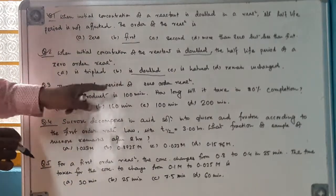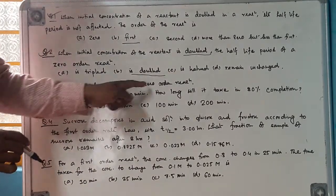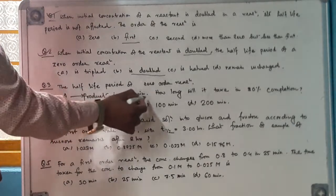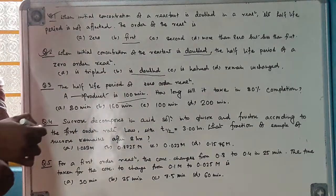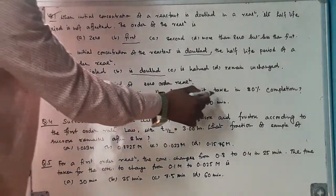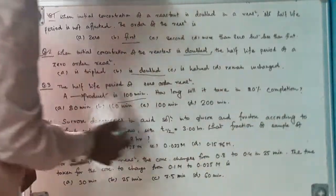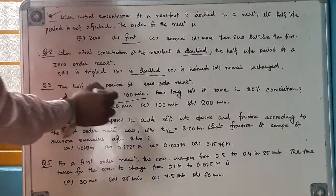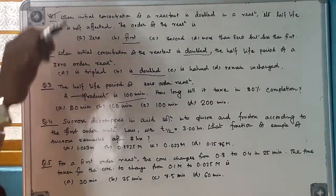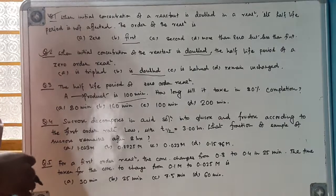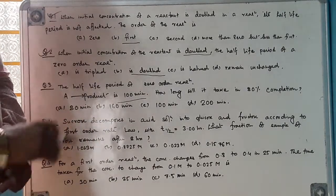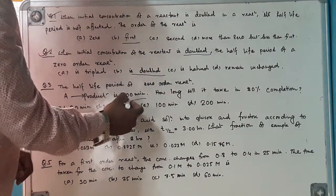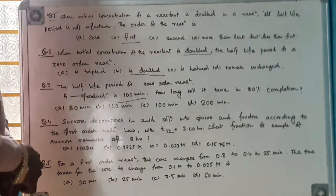Question 3: The half-life period of a zero-order reaction is 100 minutes. How long does it take for 80% completion? Since half-life is 100 minutes, 50% is covered in 100 minutes. Using the proportionality relation and the unitary method, we can calculate the time for 80% completion.